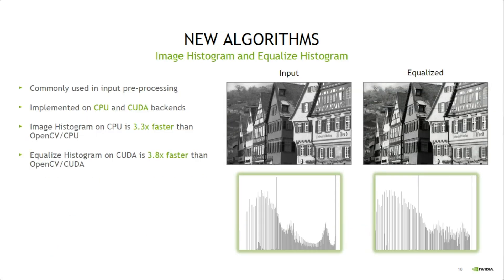The image histogram and image histogram equalization are important operations which are often needed in more complex pipelines. VPI implements them on both CPU and CUDA backends with great performance. VPI's image histogram on CPU, for instance, is around 3.3 times faster than OpenCV, and image histogram equalization on CUDA is 3.8 times faster than OpenCV.